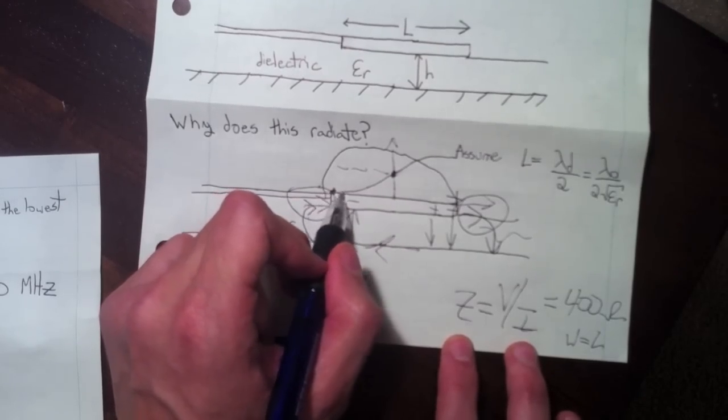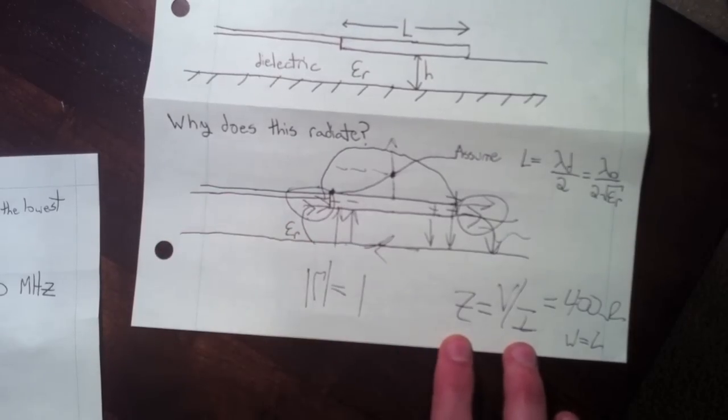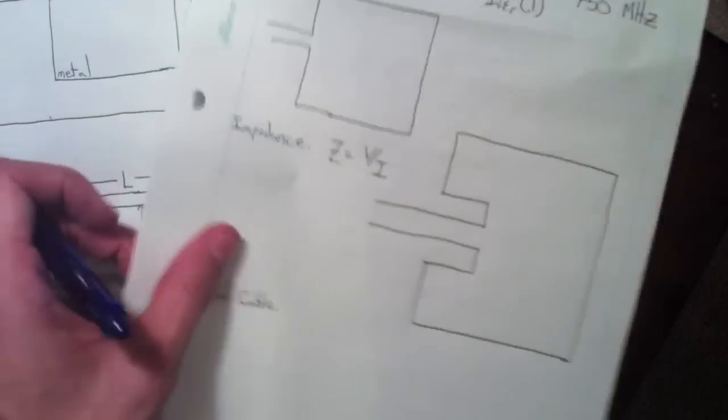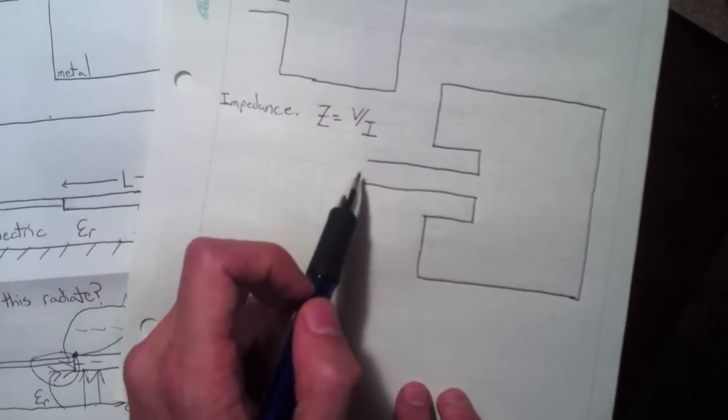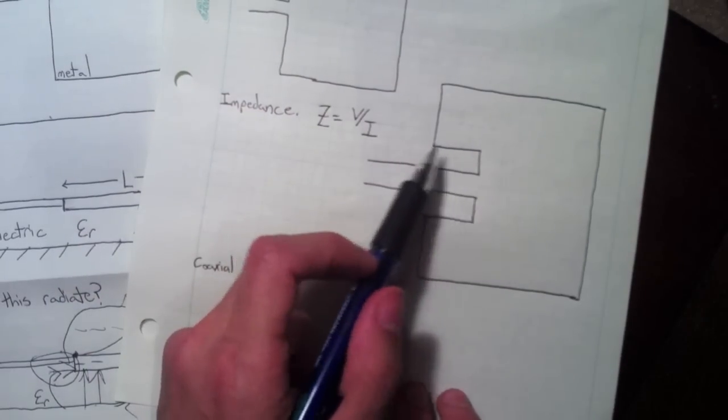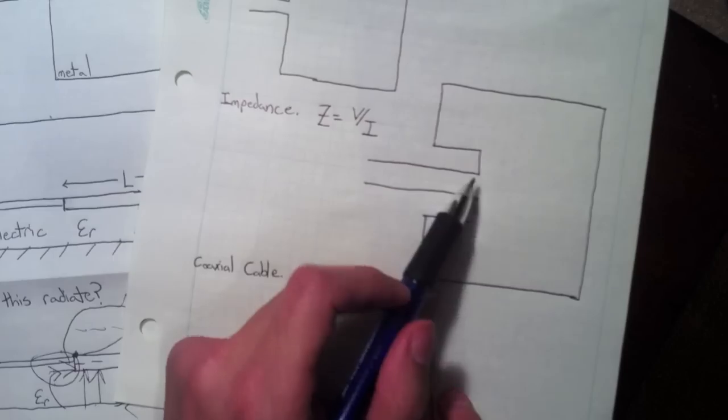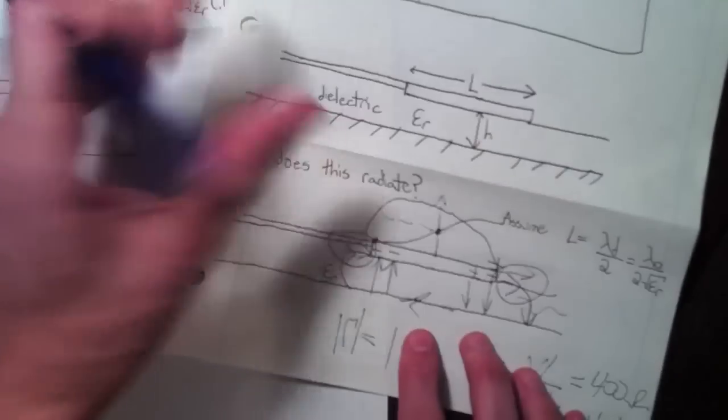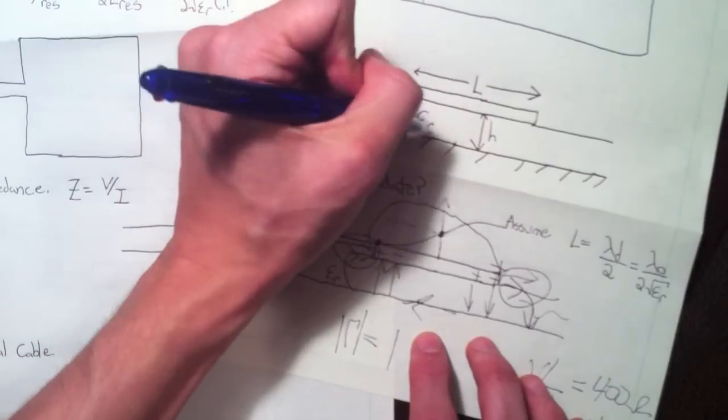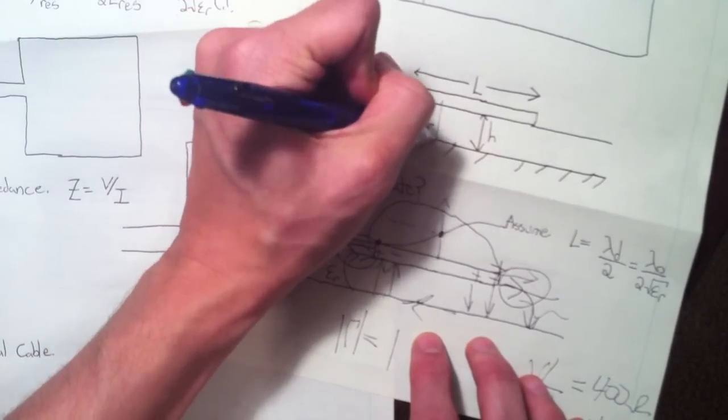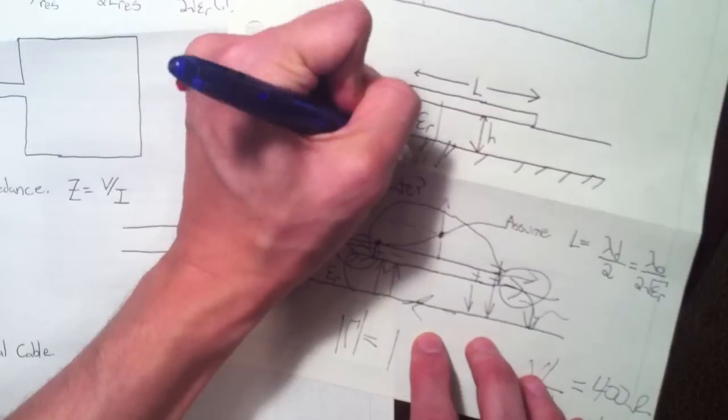So if we want to get 50 ohms, we just need to move the feed point somewhere inside the edge of the patch. So here's one way of doing that, just inset the feed so you move the feed point in. Another way is if you feed with a coaxial cable you can come right up the bottom and ground the outer connector to the ground plane and move the center connector up and connect it where you want.